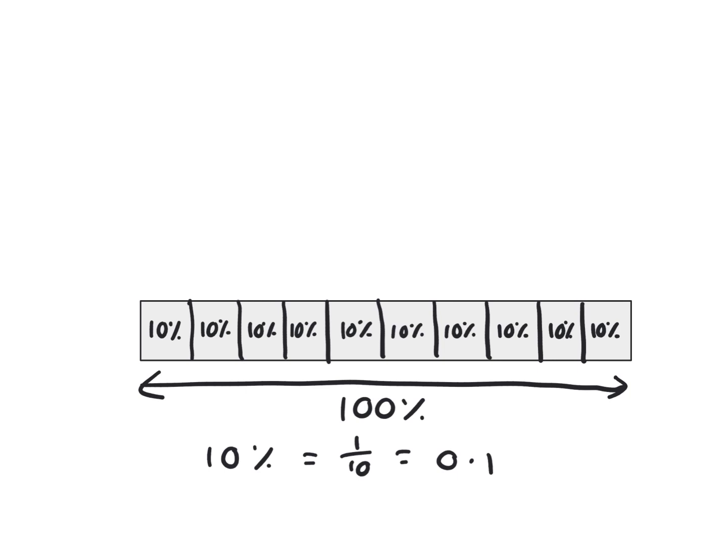Let's move the diagram to the bottom and run through some examples. The first one: 10% of 70. If 100%, all of it, is 70, then if I divide that up into 10 equal parts, each part is worth 7. We only need 10%, so it's just going to be this one here, giving us an answer of 7.